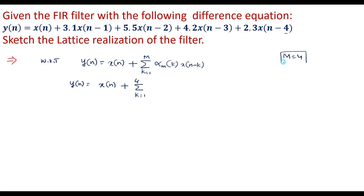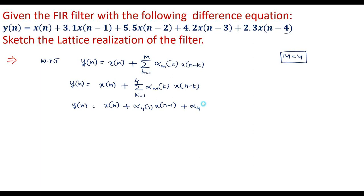Therefore m is equal to 4. So I can write alpha_m(k) * x(n-k). Further simplifying, I can write y(n) = x(n) + alpha_4(1)*x(n-1) + alpha_4(2)*x(n-2) + alpha_4(3)*x(n-3) + alpha_4(4)*x(n-4).